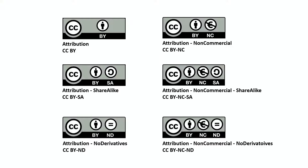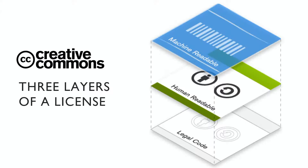The licenses range from most open to most restrictive. CC BY is just attribution — you can modify the work, sell it, do everything you want, but you must always attribute the creator. Then attribution share alike requires you to license your derived work under the same license. Attribution no-derivatives means you cannot modify the work. And there are reflections of those three licenses that additionally prohibit any commercial advantage.